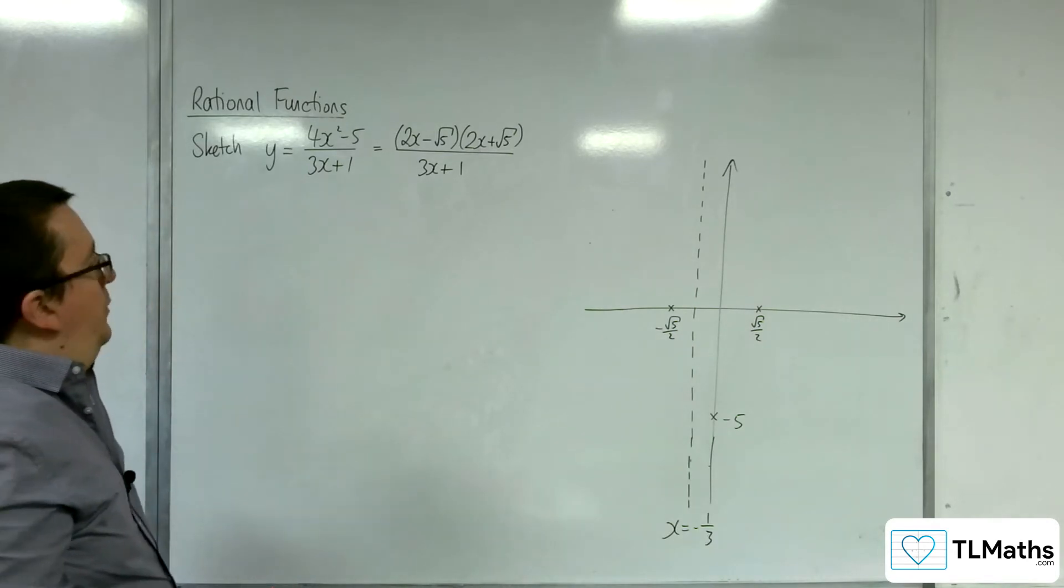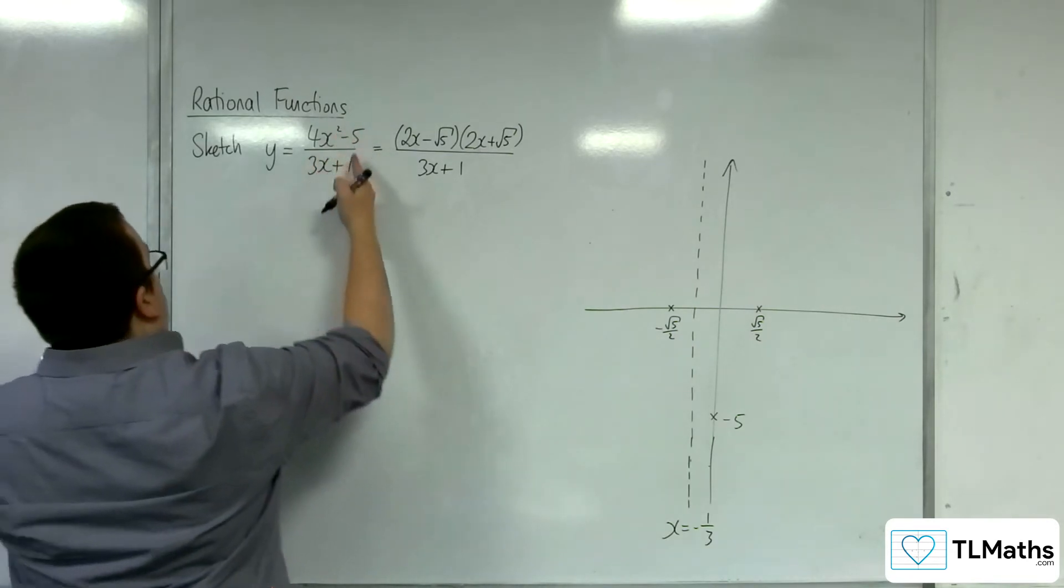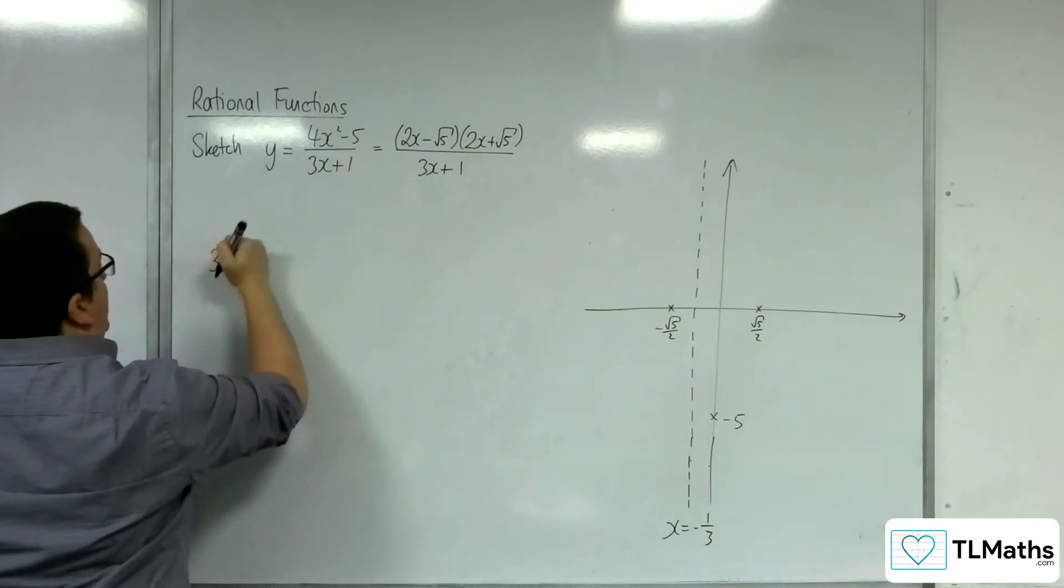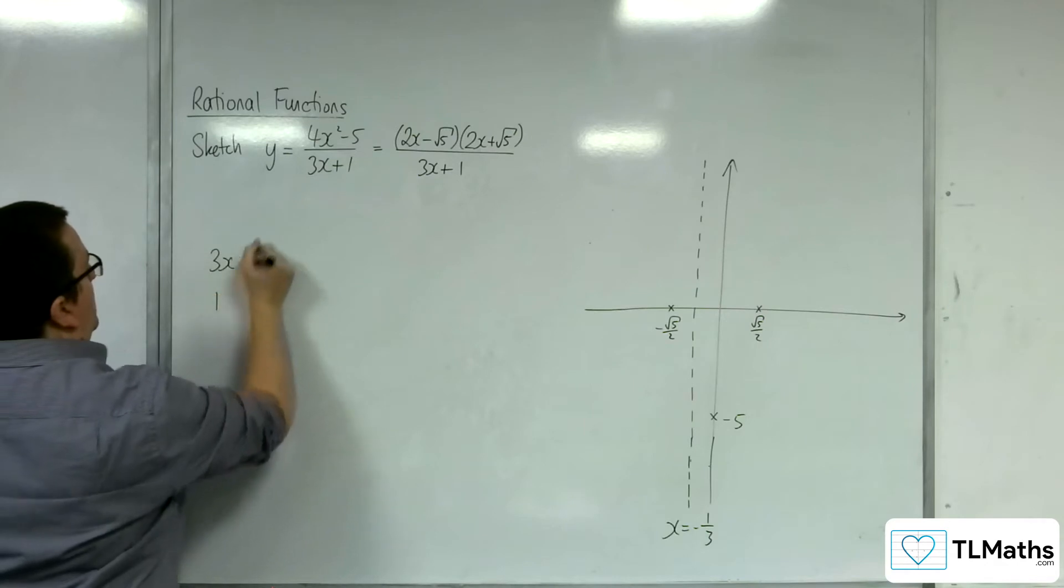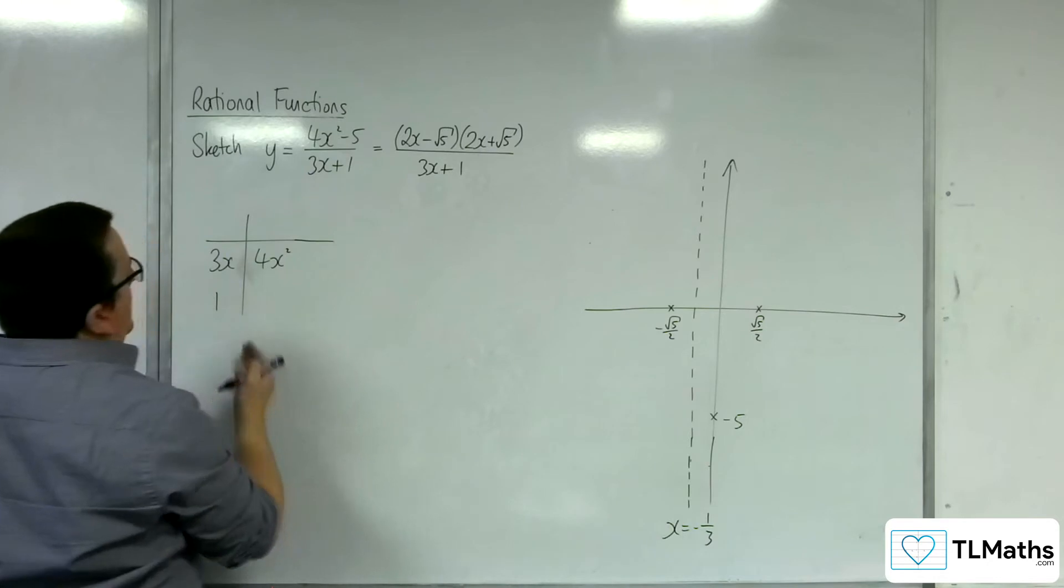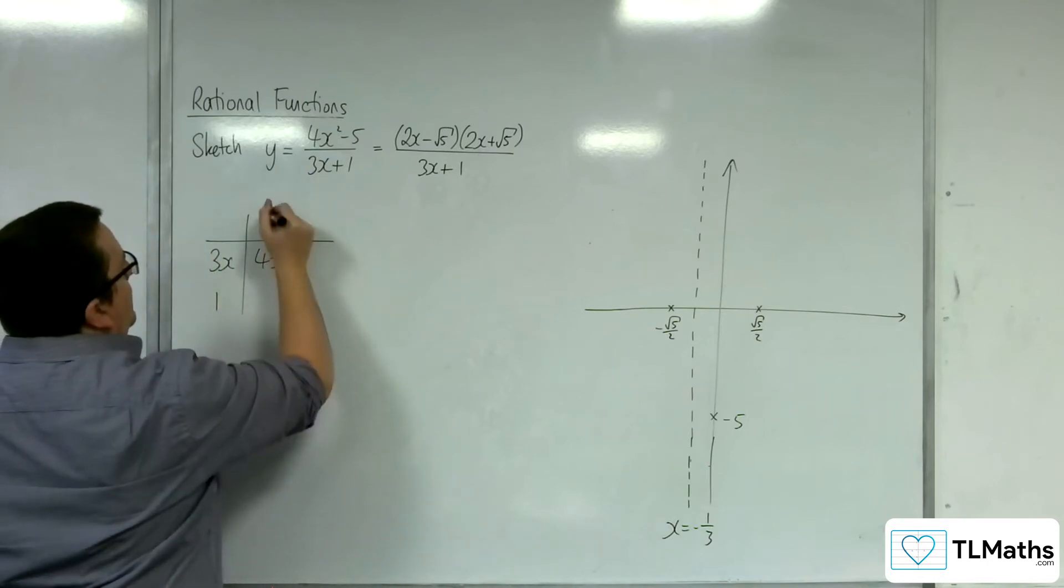Now for the oblique asymptote. So we're going to divide numerator by denominator. So 3x plus 1. And we want 4x squared. So 3x into 4x squared goes 4 thirds x.